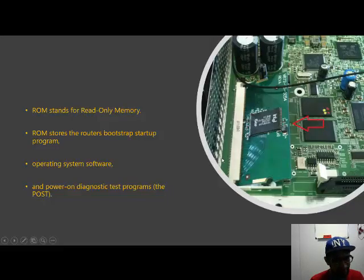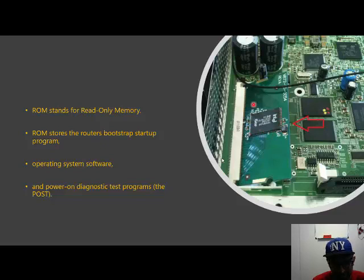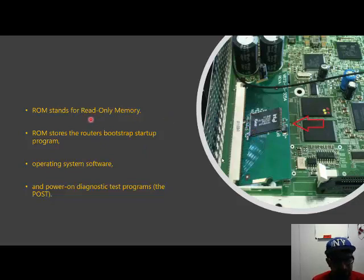The first memory that we have, as you can see here in the picture, is the ROM memory. You don't need to buy this memory — it is already there. It brings a lot of important content: the operating system software is here and you cannot erase, delete or write content. It is the read-only memory, so it is just for you to use, not to rewrite or delete. ROM stands for read-only memory, and it brings the router's bootstrap startup program, so everything will start here.